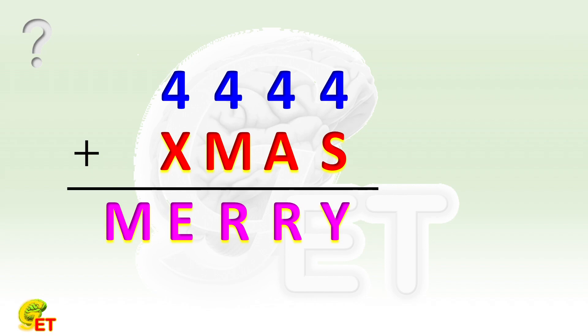The four-digit number must be smaller than 10,000, so MERRY is smaller than 14,444. Then M can only be 1. And of course, the letter M in XMAS is also 1.